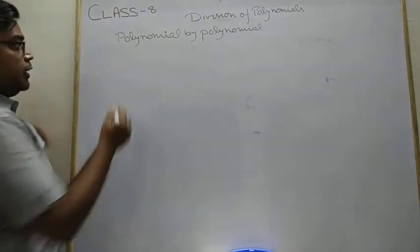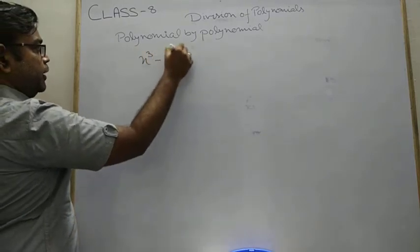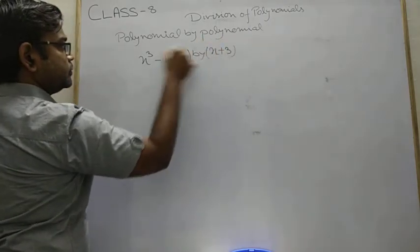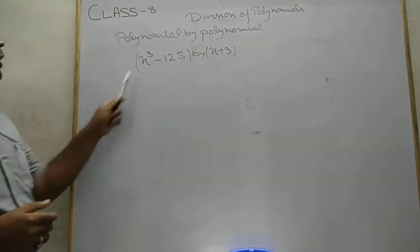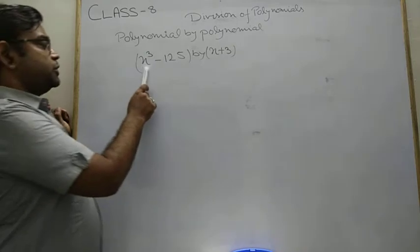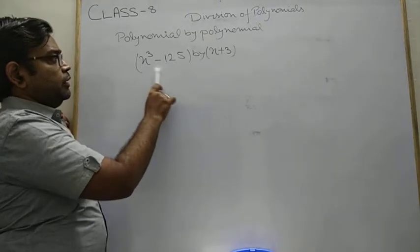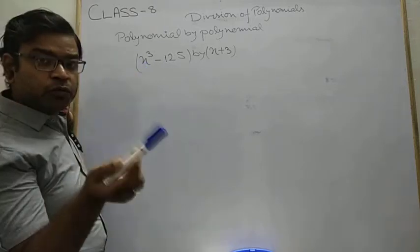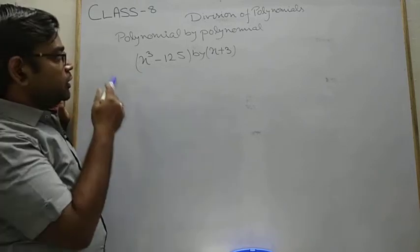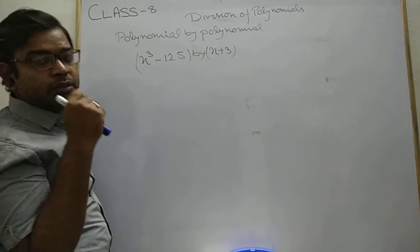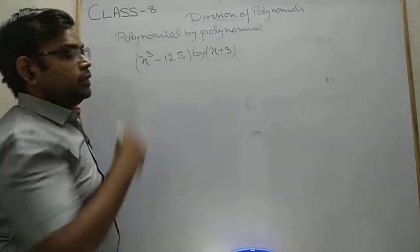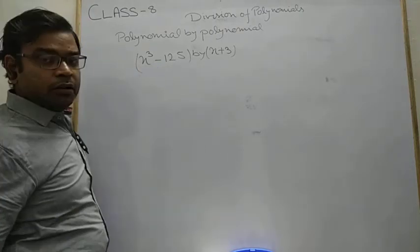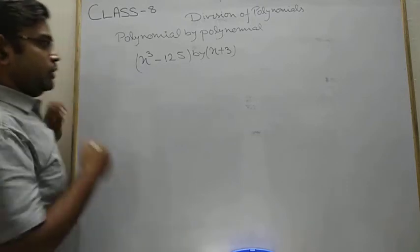For example, suppose the question is: divide x to the power 3 minus 125 by x plus 3. In this case you can easily understand that x³ is given and 125 is given, but in between we have some more degrees - square means degree 2, and degree 1. So in this case it is not given, meaning something is missing. So how we divide this one? Leave a space in this polynomial for the required division. Let's start.